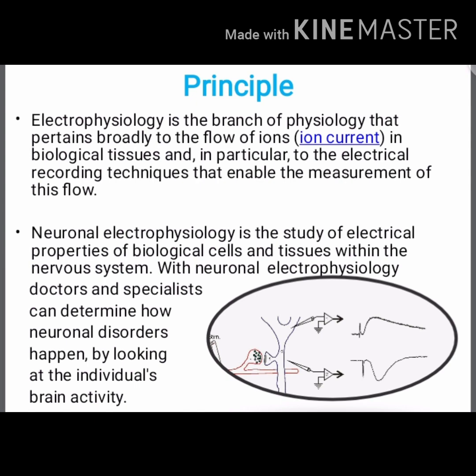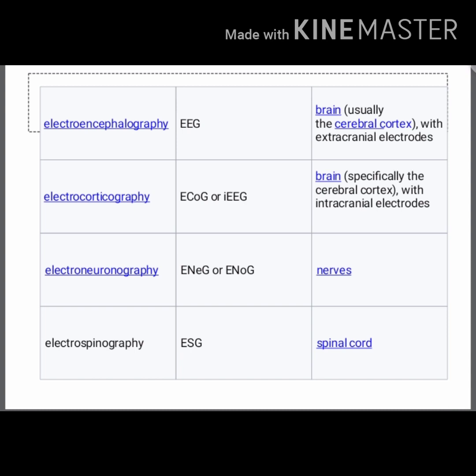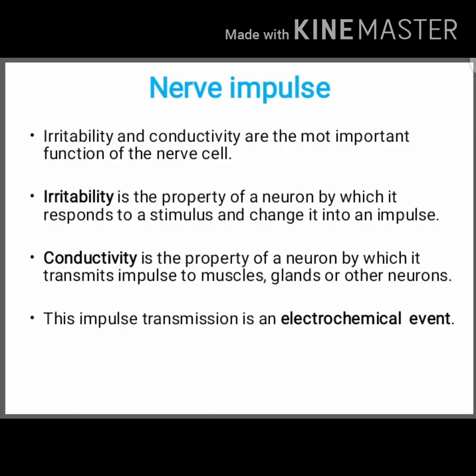With neural electrophysiology, doctors and specialists can determine how neuronal disorders happen by looking at the individual's brain activity. Technologies like electroencephalography (EEG) for the brain and cerebral cortex, electrocorticography, electroneuronography, and electrospinography (ESG) are used for clinical purposes in neuronal sciences.